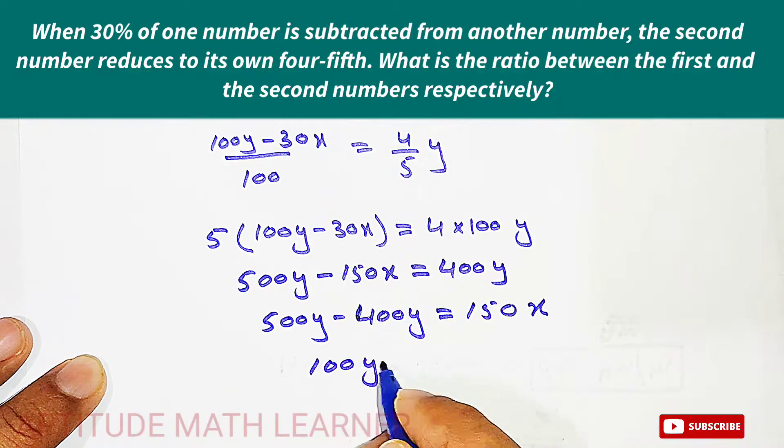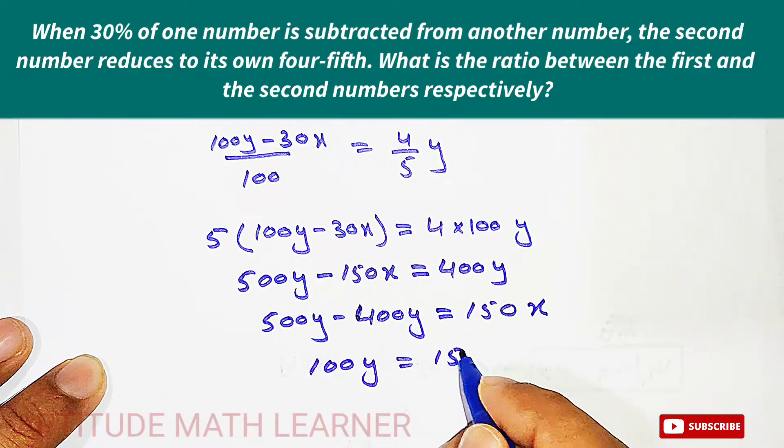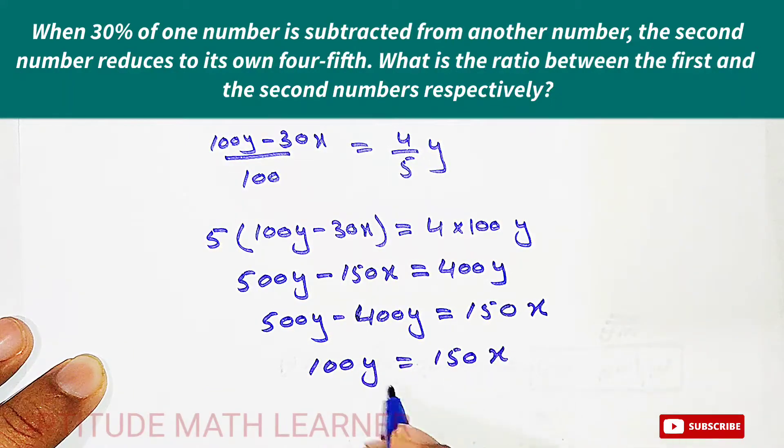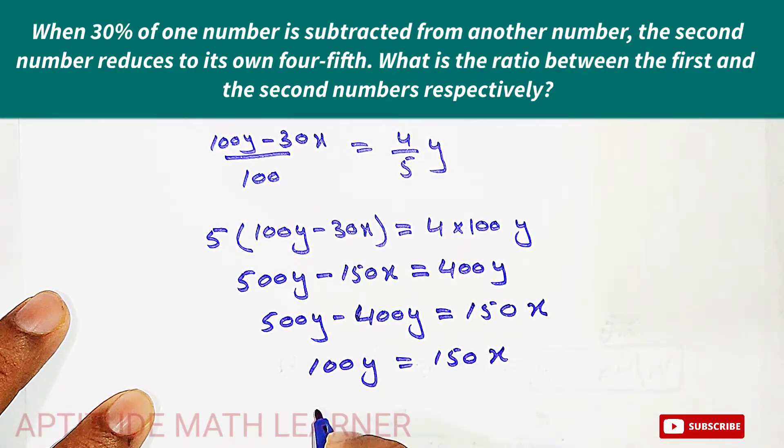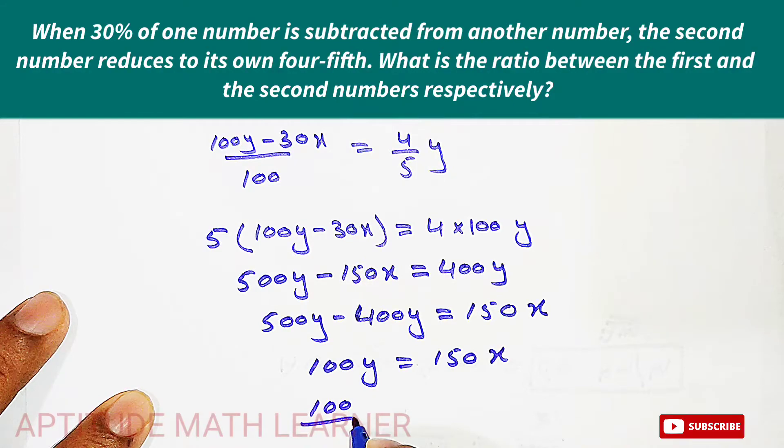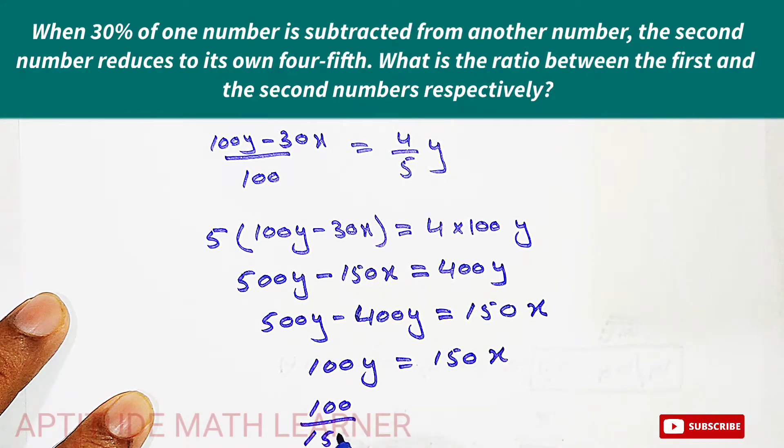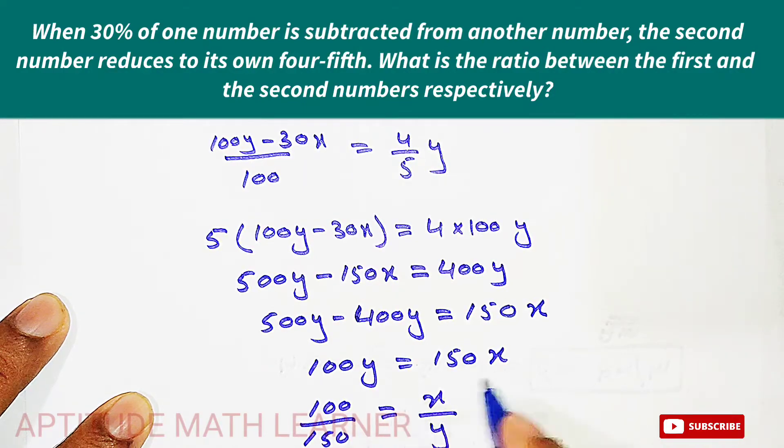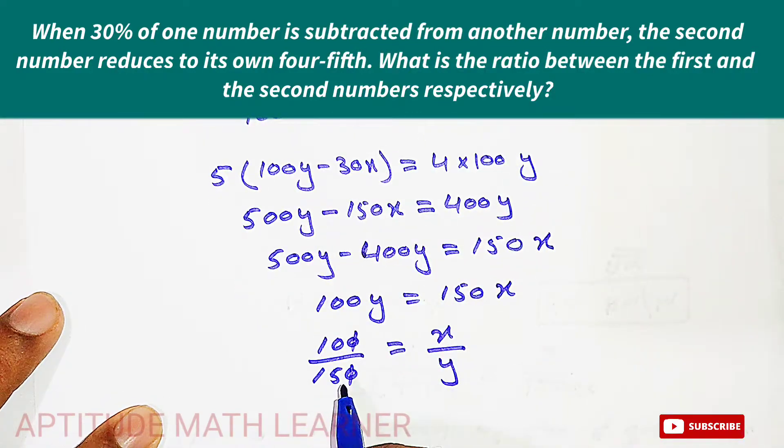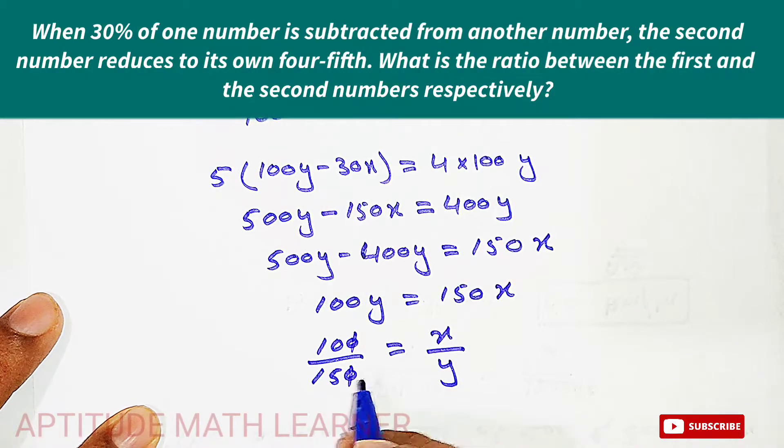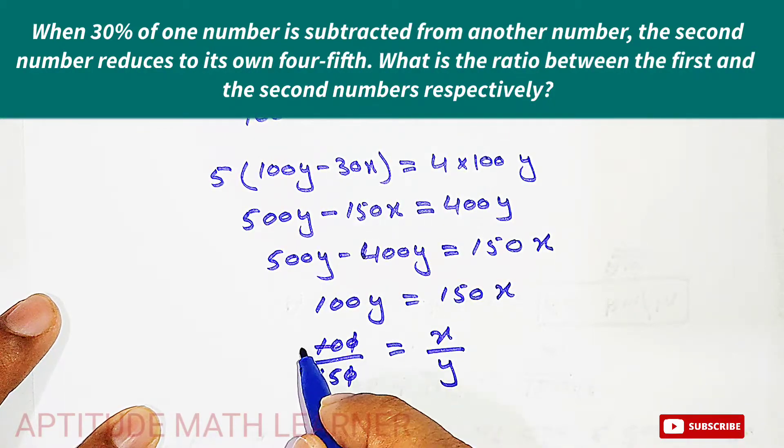And now the ratio for x and y, so this becomes 100 divided by 150. So this has gone downward is equal to x and y. Here y goes downward and it becomes x upon y. So here we cancel out the zeros, and if we further divide it by 5 we get 2 and 3. So now the value we have got for x upon y is 2 upon 3.